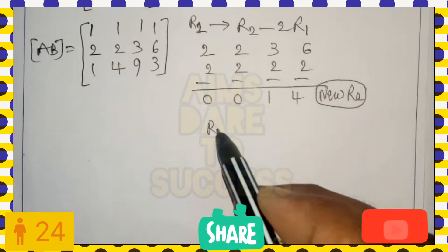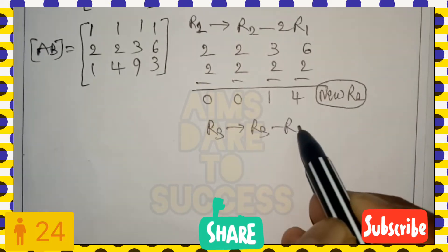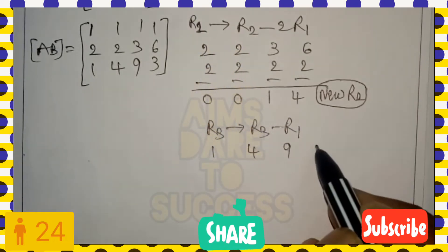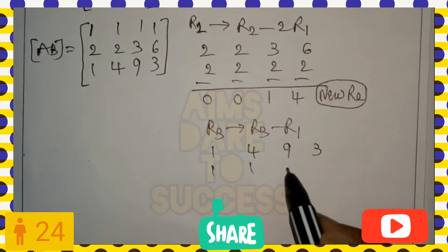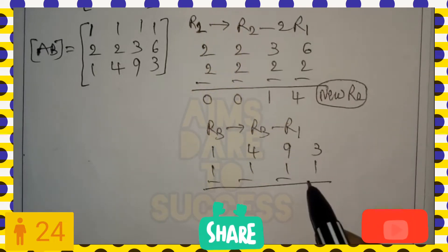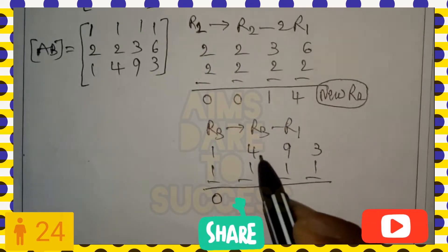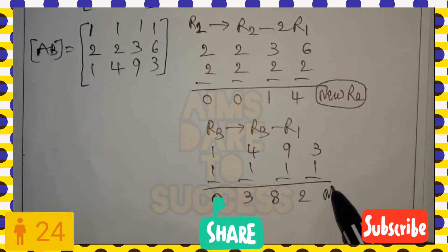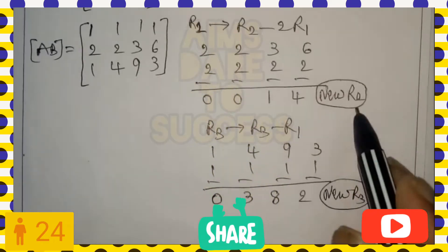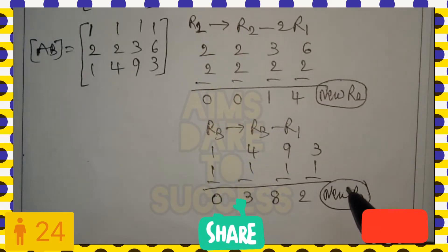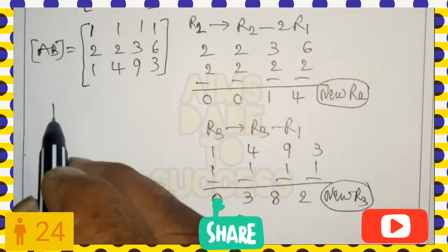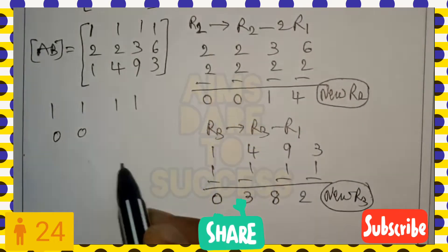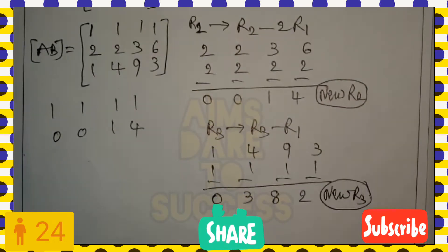Next, to get zero in R3's first element, we apply R3 → R3 minus R1, since both have a 1 in column one. R3 is [1, 4, 9, 3] and R1 is [1, 1, 1, 1]. Subtracting: 1−1=0, 4−1=3, 9−1=8, 3−1=2. New R3 is [0, 3, 8, 2]. Rewriting the matrix: R1 = [1, 1, 1, 1], new R2 = [0, 0, 1, 4], new R3 = [0, 3, 8, 2].